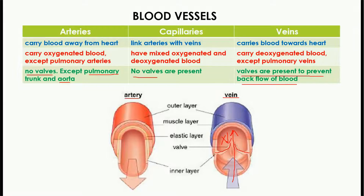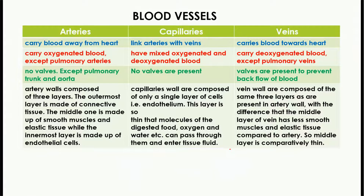What could be the reason for valves being present in veins but absent in arteries? The reason is that the pressure and flow of blood in the arteries is very high — blood is moving at very high speed. But in the case of veins, the speed of blood is very low, and because of this low speed the blood can move back, so valves are present in veins to prevent this backflow.